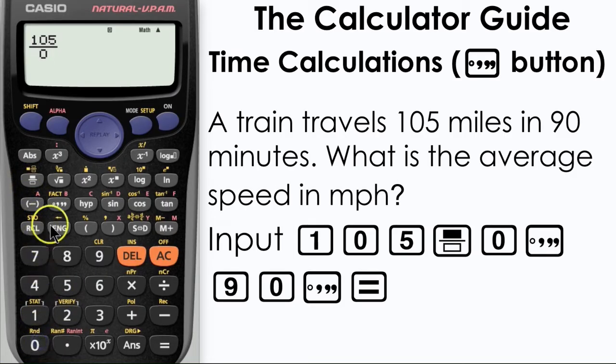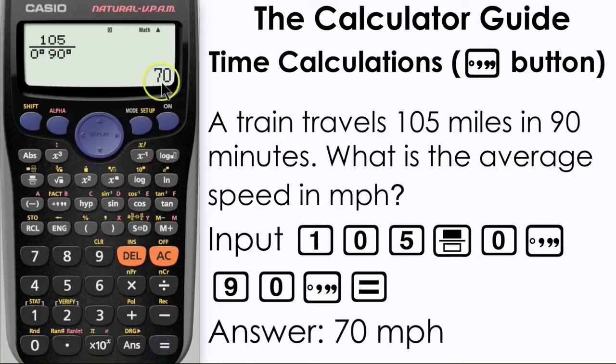So we'll input the distance of 105 miles and press the fraction button to represent our calculation, and input 90 minutes using the degrees minutes and seconds button. Here's our answer, 70 miles per hour.